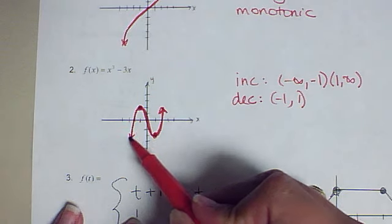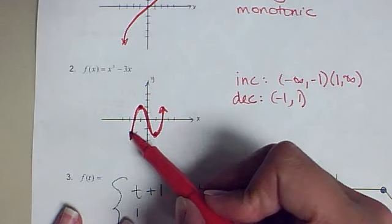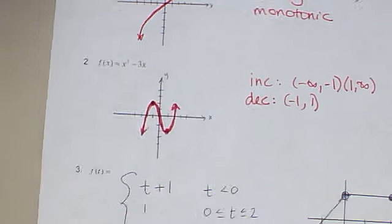Notice right here that even though this arrow is going down, this is increasing because I'm moving from left to right. This is increasing. Watch out for that. That can be a little bit tricky.